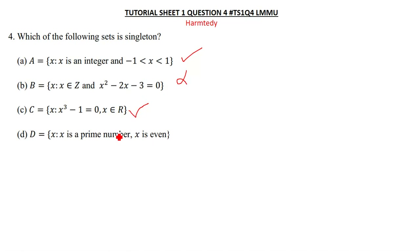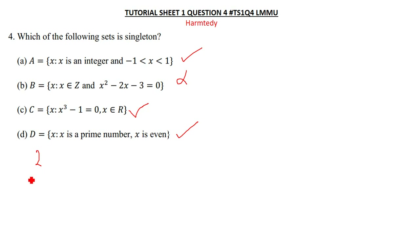D says: x is such that x is a prime number and x is also even. We only have one prime number that is also even. Two is a prime number and it is also an even number. So this is also a singleton set because there is only one number which is both prime and even, and that is two.